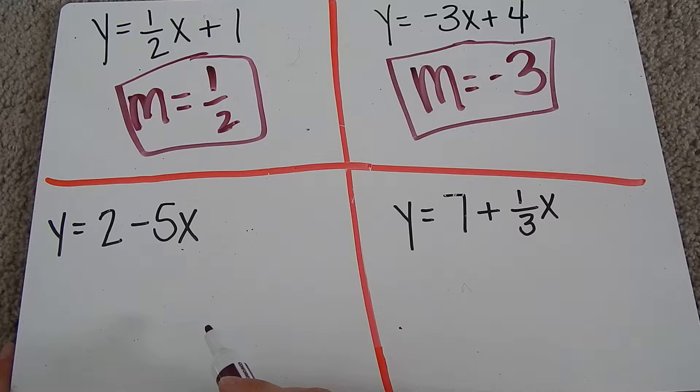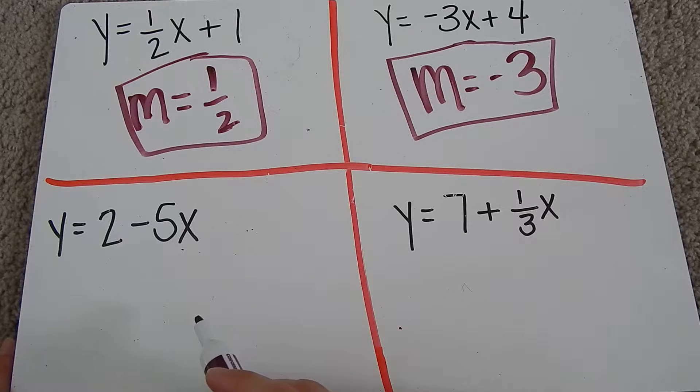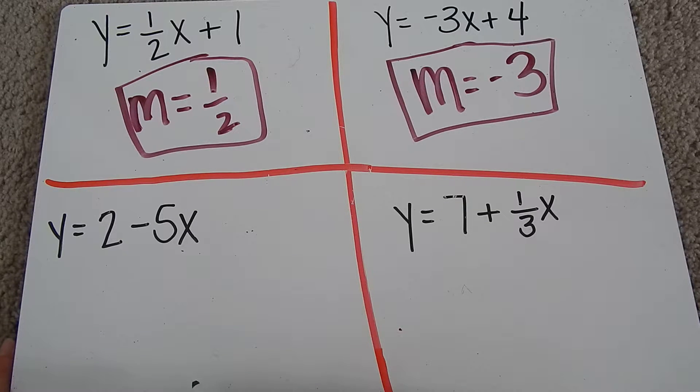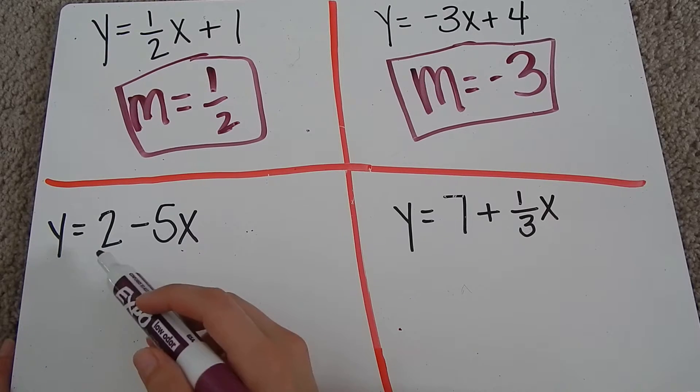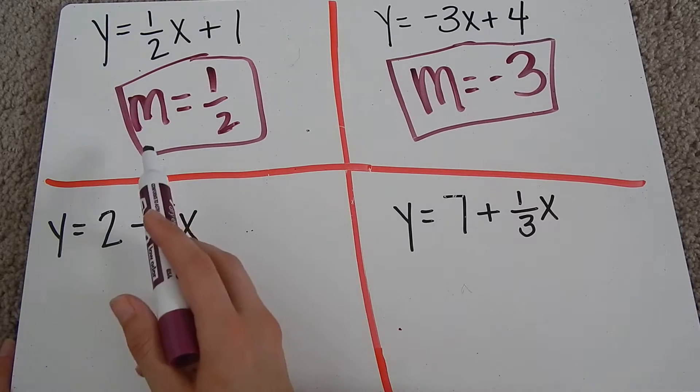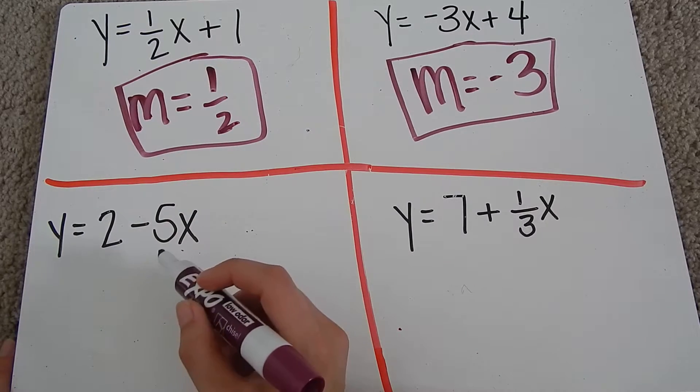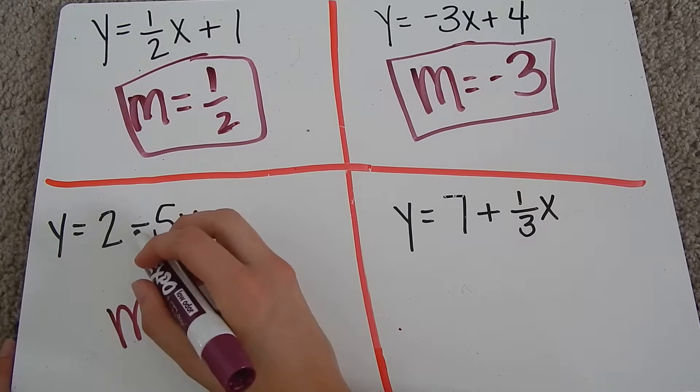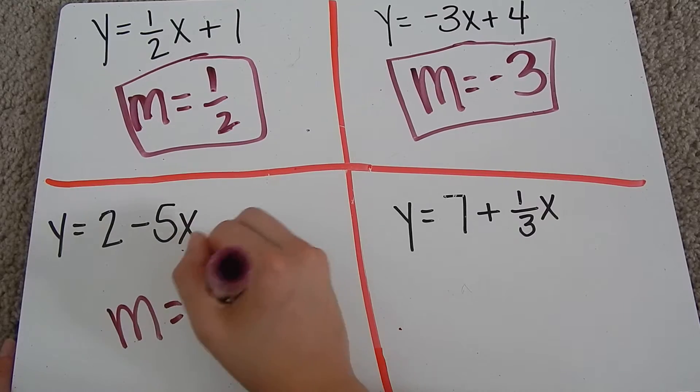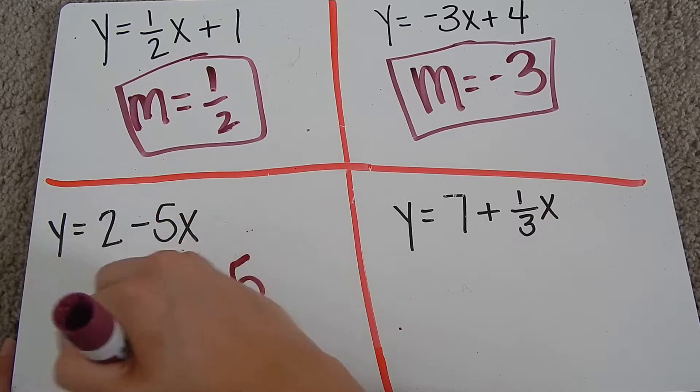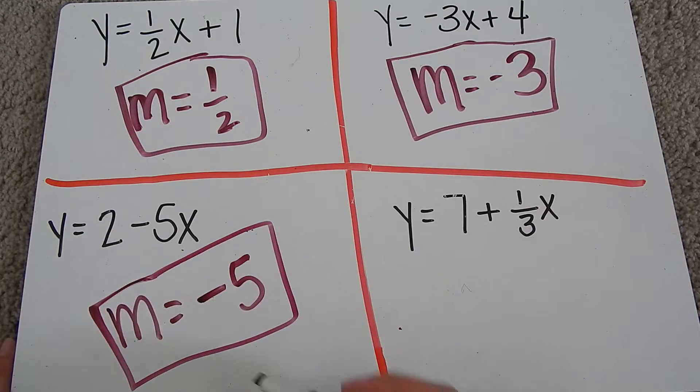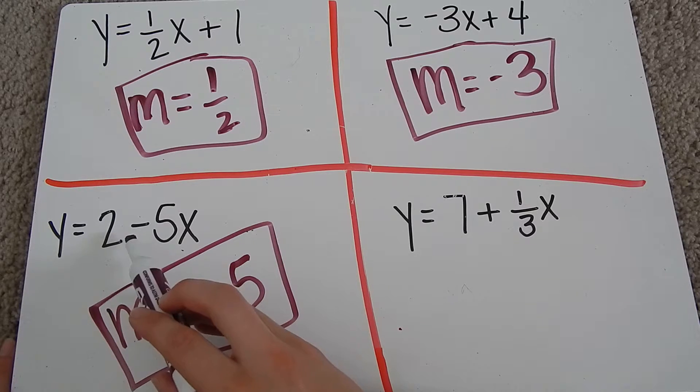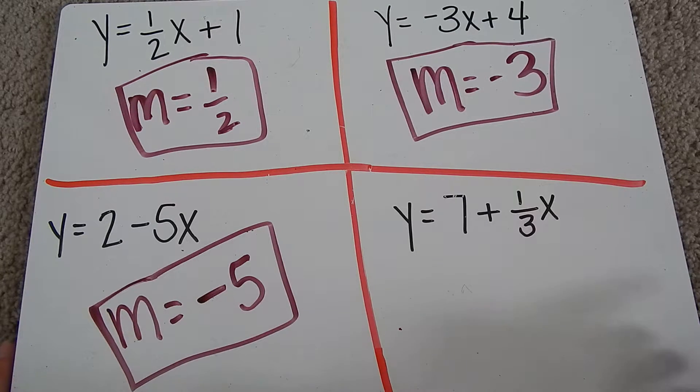Down here in my next box, I have y equals two minus five x. Again, we're looking for the number attached to the x. So it's not the first number we see like it was in these first two. It's the number attached to the x, which is a negative five. Do not forget to put the negative there because it's a minus five x, so it's a negative five.